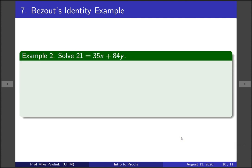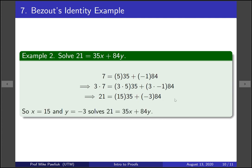Now let's look at one last example. Can you solve this equation, 21 is equal to 35x plus 84y? Well yeah, because we could solve the other one, which was 7 is equal to 35x plus 84y. So because we can solve this easier one, multiply everything through by 3, and you get a solution to the more complicated one. So this tells you that if you can solve something, you can solve something more complicated.